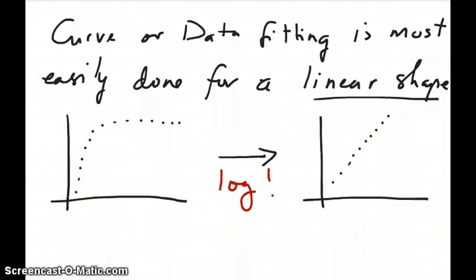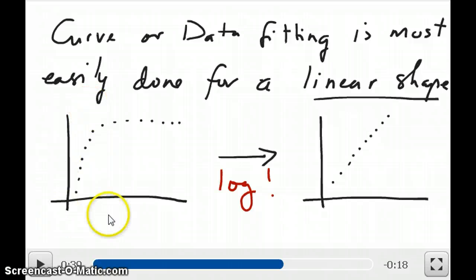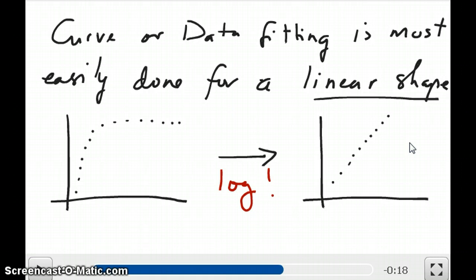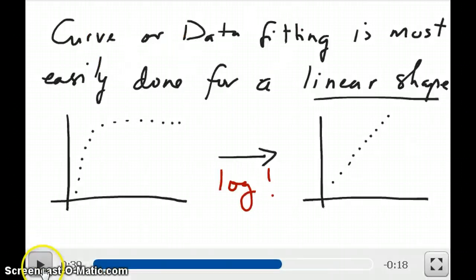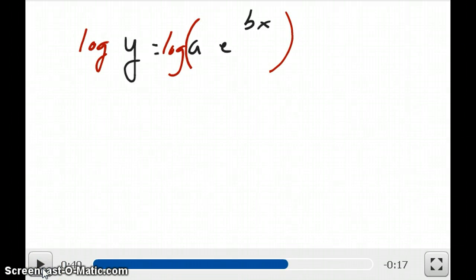Our goal is to start with data that looks like this and using log, somehow convert it into data that looks like this. Once we have it in this form, then we can use least squares method to fit that data and get an equation out of it. That equation will then tell us something about the system we're studying.